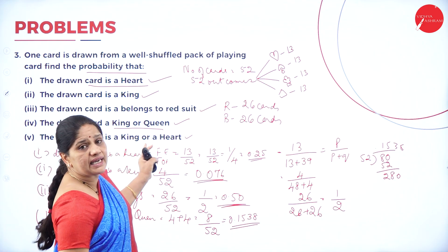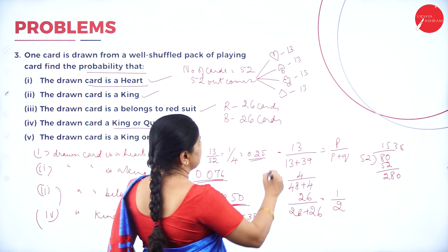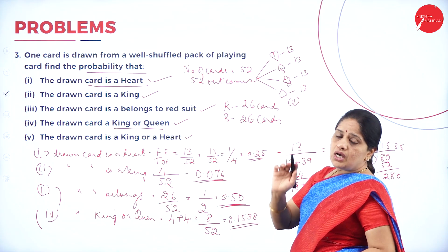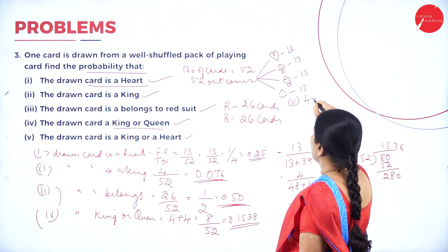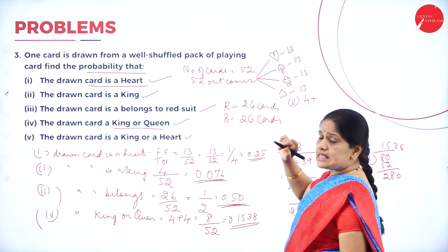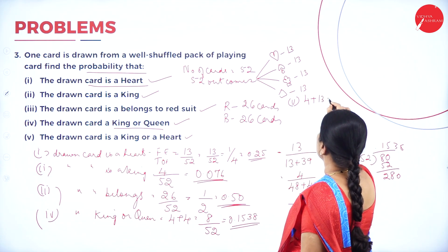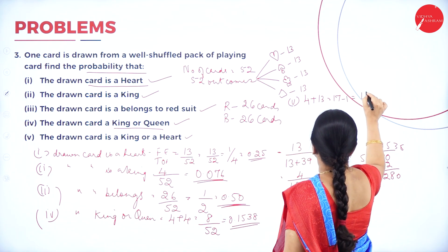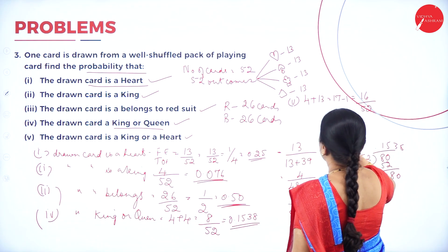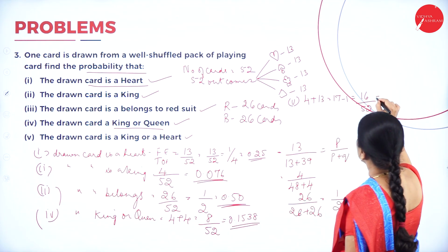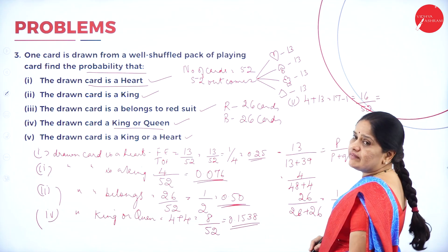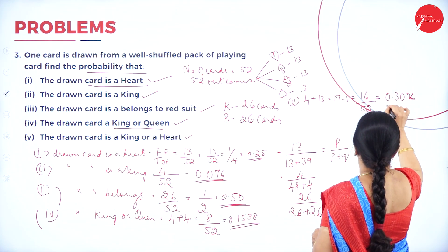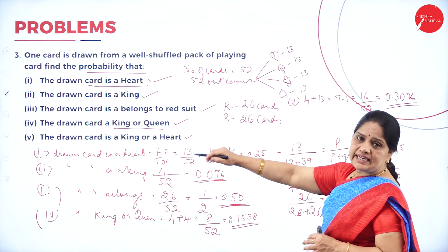The drawn card is a king or a heart. How many kings are there? 4 kings. How many heart cards do we have? Heart cards are 13. So totally it is 17, but in this 13 there is a king already. So I write it as 17 minus 1 — 16 divided by 52. The probability equals 16 divided by 52, and the answer is 0.3076. That is the probability of getting a king or a heart.